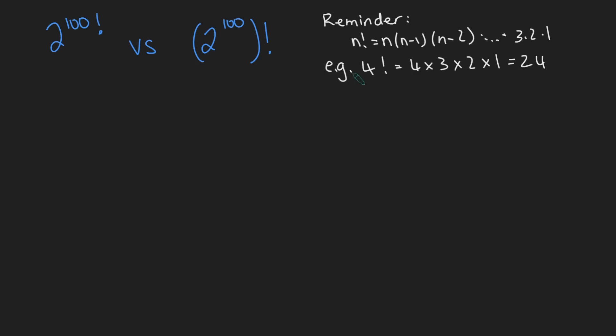And as a reminder, n factorial just means the product of the numbers up to n. So, for example, 4 factorial is 4 times 3 times 2 times 1, which is 24.